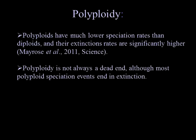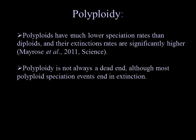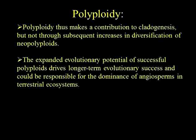We know from a paper published last year in Science that neopolyploids, once they form, have much lower speciation rates than comparable groups of diploids. And importantly, their extinction rates are significantly higher than new species that are diploids. So in spite of the fact that we know all angiosperms have had these polyploidy events, we see these indications that their extinction rates are much higher. Polyploidy is clearly not always a dead end, but most polyploid speciation events do end in extinction for that group. So this gives us a difficult set of facts to explain.